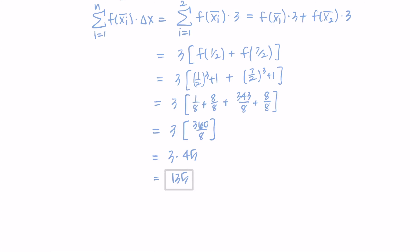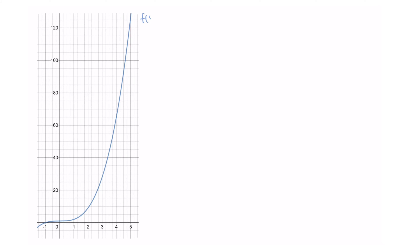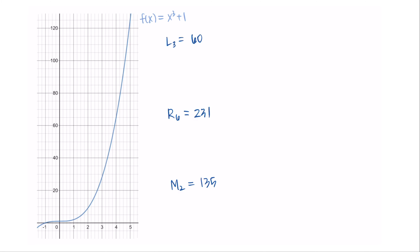We've finished the calculations — now let's look at the graph to make sure our answers make sense. I've drawn the graph of x³ + 1 with a compressed y-axis scale so we can see more of the function. Our results were: L3 = 60, R6 = 231, and M2 = 135. For the left Riemann sum, drawing those rectangles using leftmost function values shows we're heavily underestimating — we miss a lot of the growth from x = 3 to x = 5.